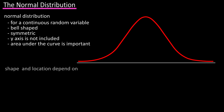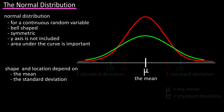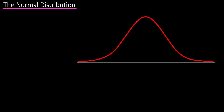Its shape, how high it is, and its location depend on two things: the mean and the standard deviation. Here are two normal distributions graphed together. The red one has a higher peak, and the green one is more spread out. They both have the same mean, but the green one has a larger standard deviation, making it more spread out.